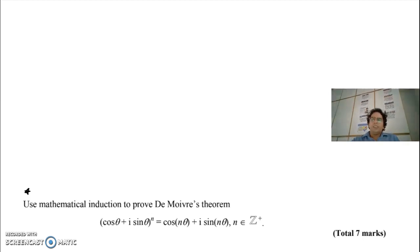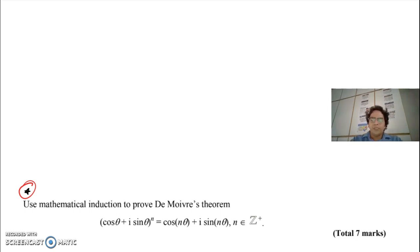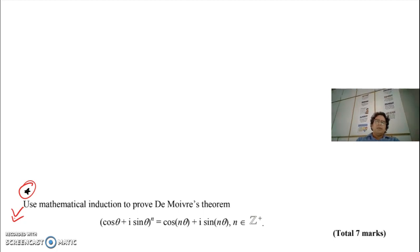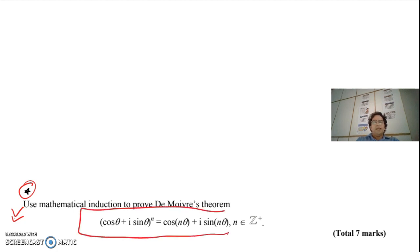Taking the first one, which is generally asked in a math actual examination — the first one is De Moivre's theorem proof. The question generally asked is: prove that (cos θ + i sin θ)^n = cos nθ + i sin nθ.